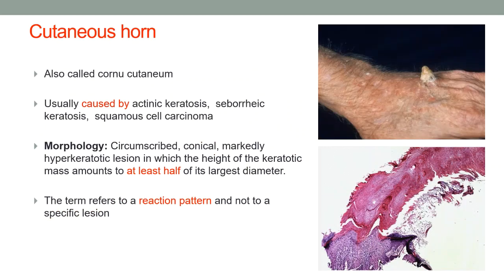Cutaneous horn, also known as cornu cutaneum, is usually caused by actinic keratosis, seborrheic keratosis, or in some cases squamous cell carcinoma. Clinically it is a circumscribed, conical, markedly hyperkeratotic lesion where the height of the keratotic mass is at least half of its largest diameter. The lesion is composed predominantly of keratin. Cutaneous horn is a reaction pattern and not a specific lesion.